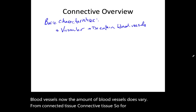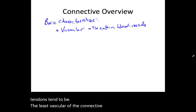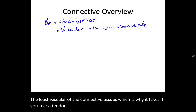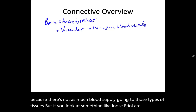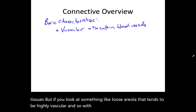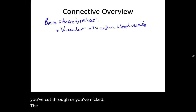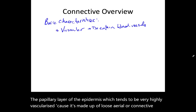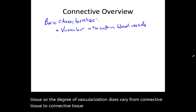The amount of blood vessels does vary from connective tissue to connective tissue. For example, tendons tend to be the least vascular, which is why if you tear a tendon or a ligament it takes so long to heal — there's not as much blood supply going to those tissues. But something like loose areolar tends to be highly vascular. If you cut your finger and it goes beyond the epidermis down into the dermis, it bleeds because you've nicked the papillary layer, which is made up of loose areolar connective tissue. So the degree of vascularization varies, but all connective tissue is vascular.